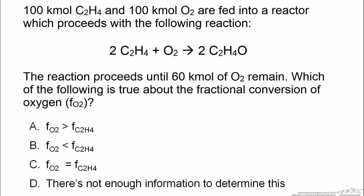100 kilomoles of ethylene and 100 kilomoles of oxygen are fed into a reactor which proceeds with the following reaction: 2 moles of ethylene and 1 mole of oxygen combust to form ethylene oxide. The reaction proceeds until 60 kilomoles of oxygen remain.